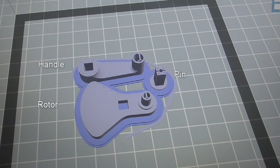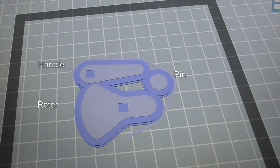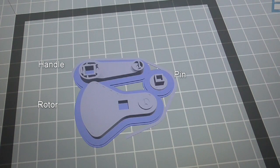Next is a set consisting of rotor, pin, and handle. All of these parts are compatible with the eight-cylinder version.